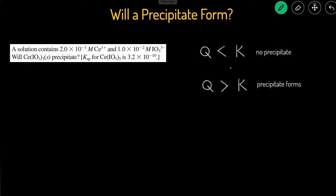Let's take a look at how those principles apply to two problems. In this first one, the solution contains a given concentration of Ce³⁺ and a given concentration of IL₃⁻, and we're asked if a precipitate will form or not.